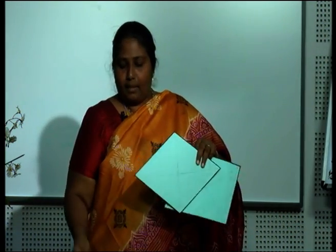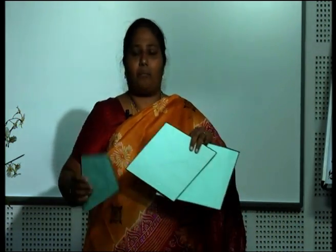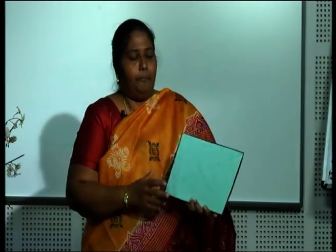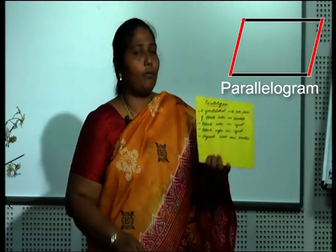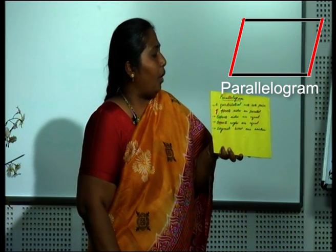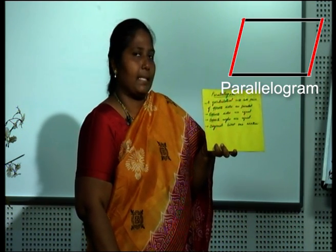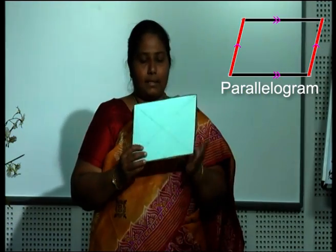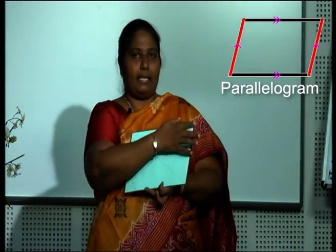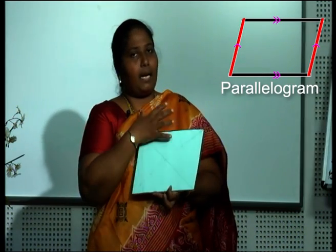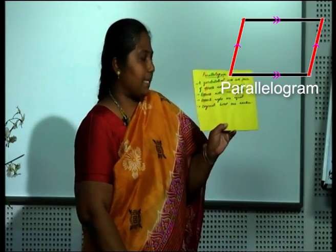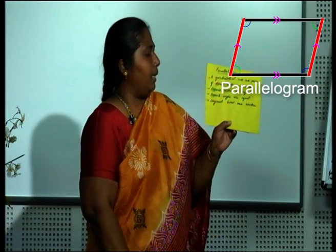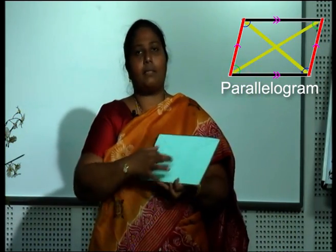You can see a few more pictures. What is this? This is a parallelogram. What are the properties of a parallelogram? A quadrilateral with both pairs of opposite sides parallel — if this is A, B, C, D, then AB and CD are parallel, and AC and BD are also parallel. Opposite sides are equal, opposite angles are equal, and the diagonals bisect each other.